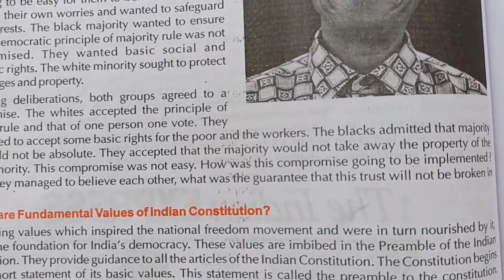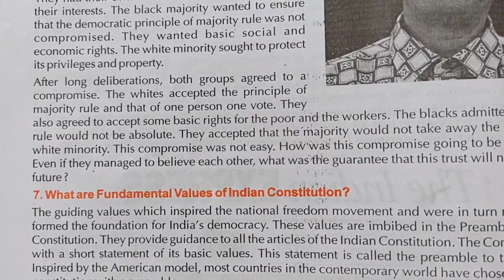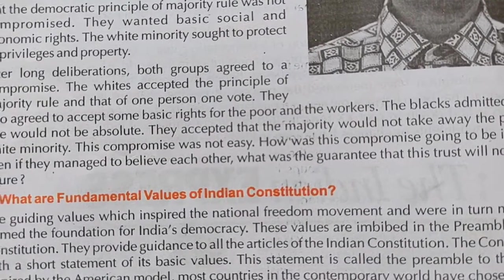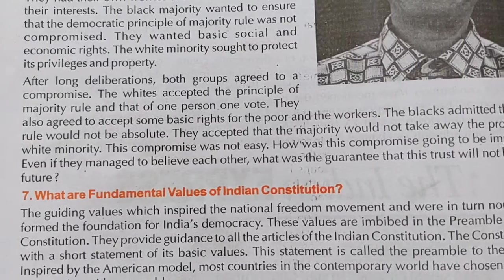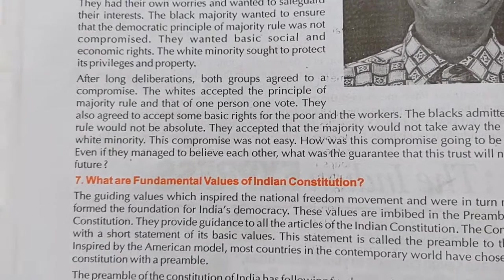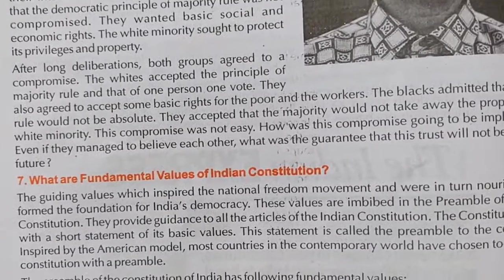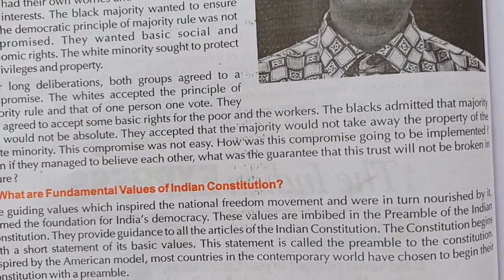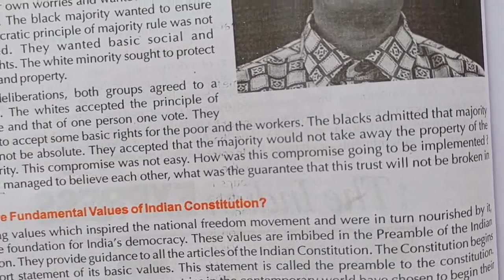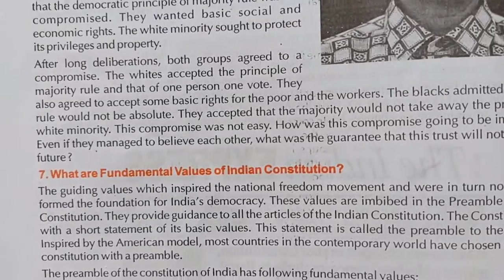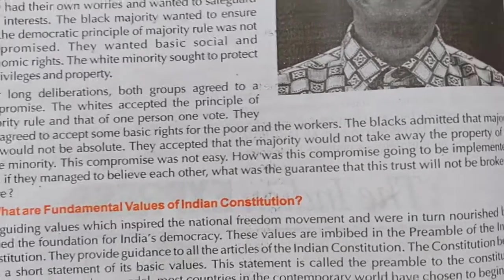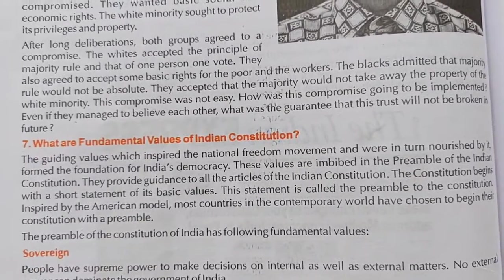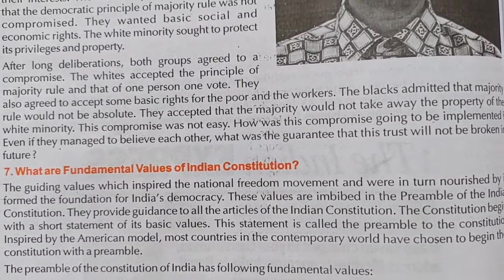The blacks admitted that majority rule would not be absolute. They accepted that the majority would not take away the property of the white minority.